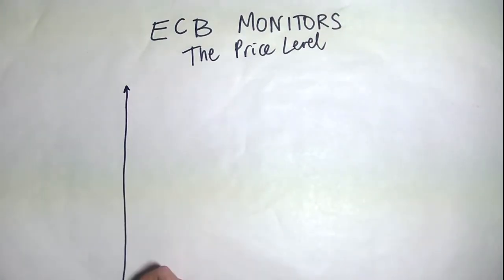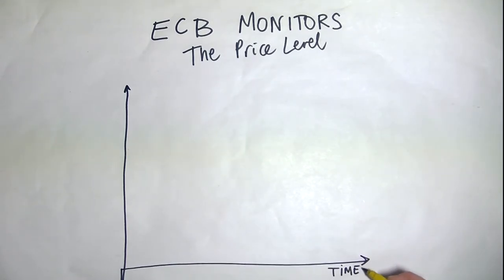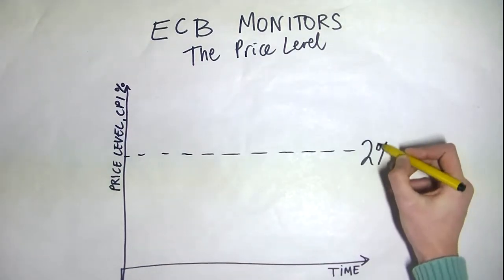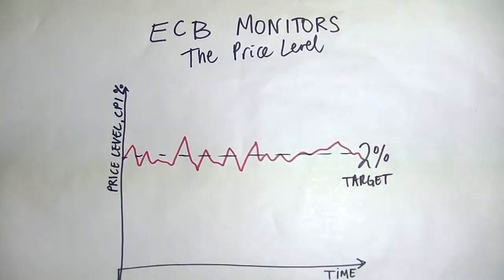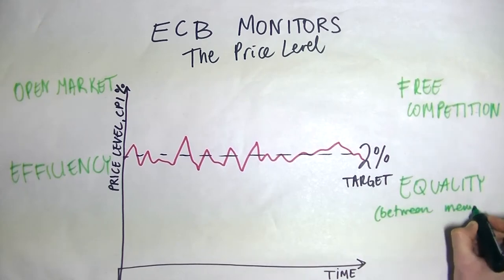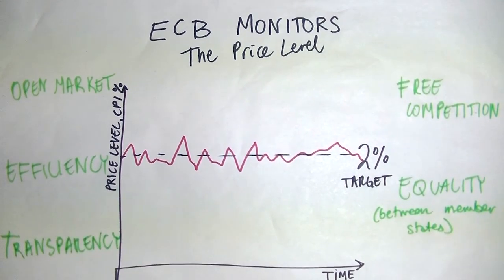Essentially what the ECB does is monitor the price level and then implement the policies necessary to reach the desired level. All of this is done in order with a treaty of the functioning of the European Union, specifically article 127, which says the ECB should work with the principles of open market and free competition.